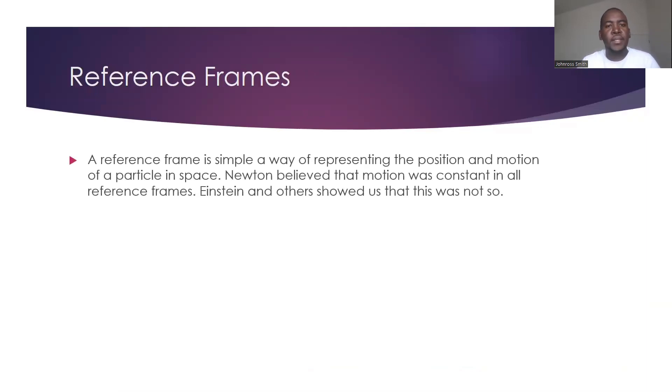The first thing to know about relativity is to know the term that's called the reference frames. A reference frame is simply a way of representing the position and the motion of a particle in space. Newton believed that motion was constant in all reference frames, meaning if I am in a car moving or someone is outside observing that car is moving, he thought that all motion were the same.